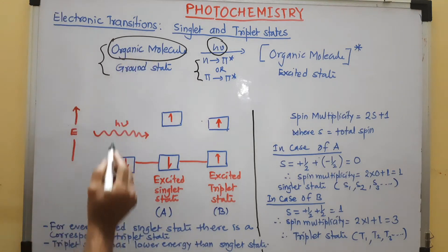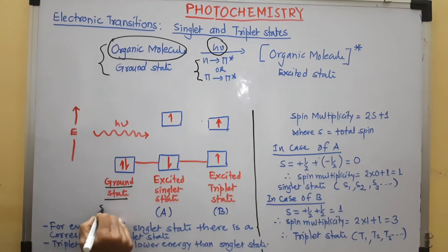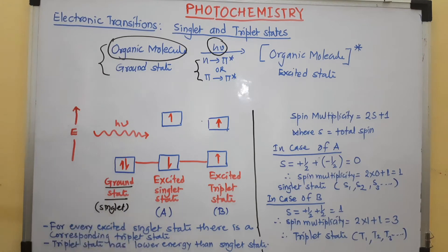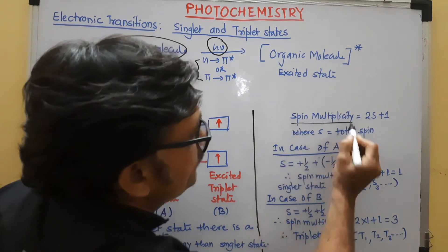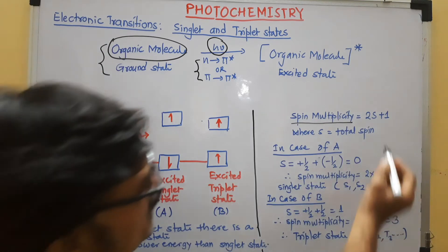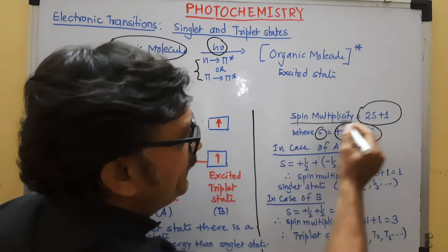In organic molecules, all electrons are paired. If all electrons are paired in the ground state, that is called singlet state. This is a singlet state. Why this is called singlet? The answer is given here. The spin multiplicity we can calculate by using a formula 2S + 1 where S is total spin.